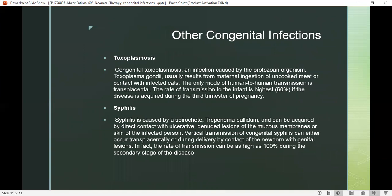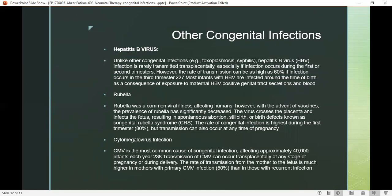There are other congenital infections in addition to HSV. Congenital toxoplasmosis is an infection caused by a protozoan organism; it results from maternal ingestion of uncooked meat during pregnancy, making the baby most likely to develop toxoplasmosis. Syphilis spirochetes — Treponema pallidum — can be transferred to the baby. The hepatitis B virus, unlike other congenital infections, is rarely transferred via the placenta; if exposure occurs in the first or second trimester, it can still be transferred to the baby.